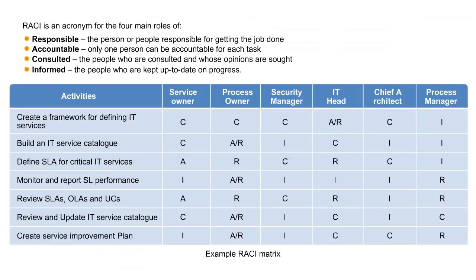What is a RACI matrix and how does it help in smooth functioning of the processes? A RACI matrix is a concept used for a distinct understanding of roles and responsibilities. The RACI model will be beneficial in enabling decisions to be made with pace and confidence. RACI is an acronym where R stands for Responsible, A stands for Accountable, C stands for Consulted, and I stands for Informed.